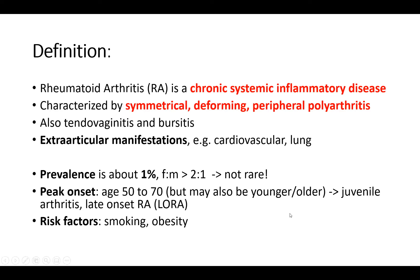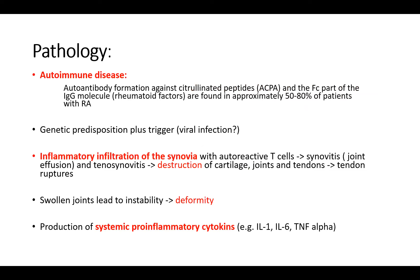Risk factors are smoking and obesity, but they're not the only culprits. By pathology, it is an autoimmune disease. There is autoantibody formation against citrullinated peptides, which are abbreviated ACPA, and the Fc part of the IgG molecule, which is also called rheumatoid factors. Those antibodies are found in approximately 50 to 80% of patients who have rheumatoid arthritis, so not all patients have those antibodies, although they are clearly suffering from rheumatoid arthritis. You need to bear that in mind when doing diagnostics.